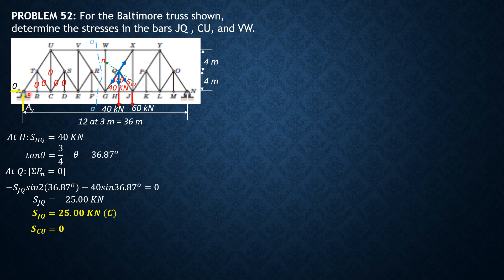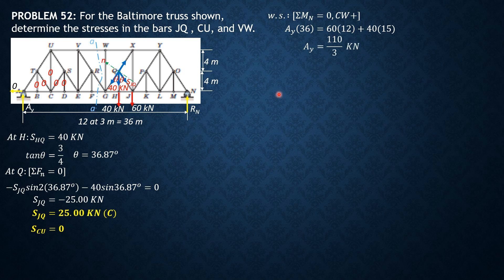AY unknown. AX is obviously 0. Then RN. Considering the whole system, summation of moment about N equals 0, clockwise positive. So we have AY times 36 equals 60 times 12 plus 40 times 15. So AY is equal to 110 over 3 kilonewtons.